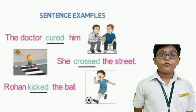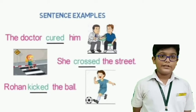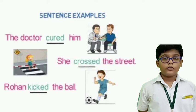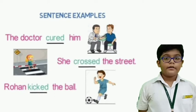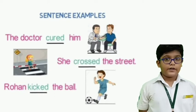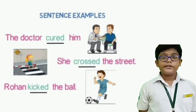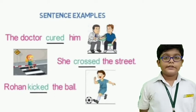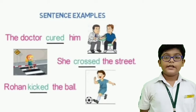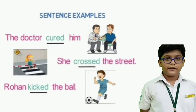Let's see a few more examples of transitive verb. 'She crossed the stream.' Here, she is the subject, crossed is the action, and stream is the direct object.